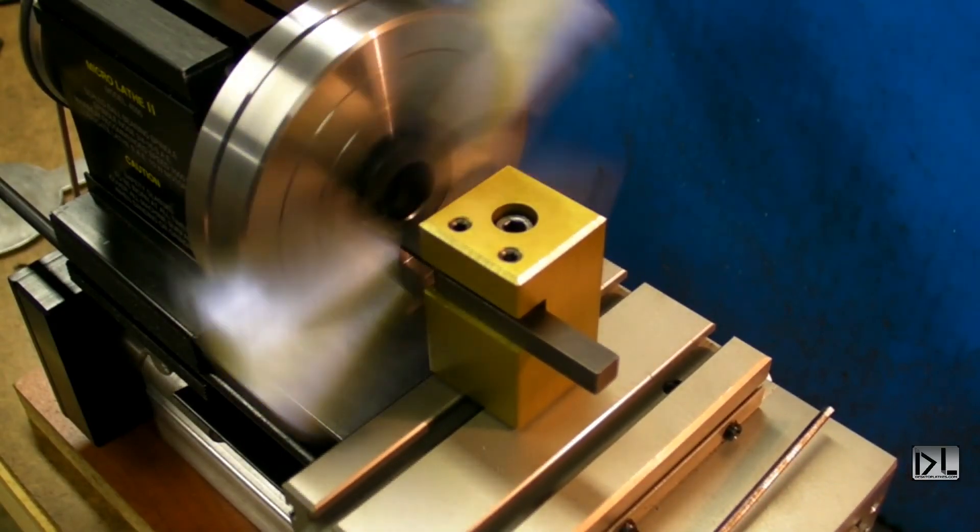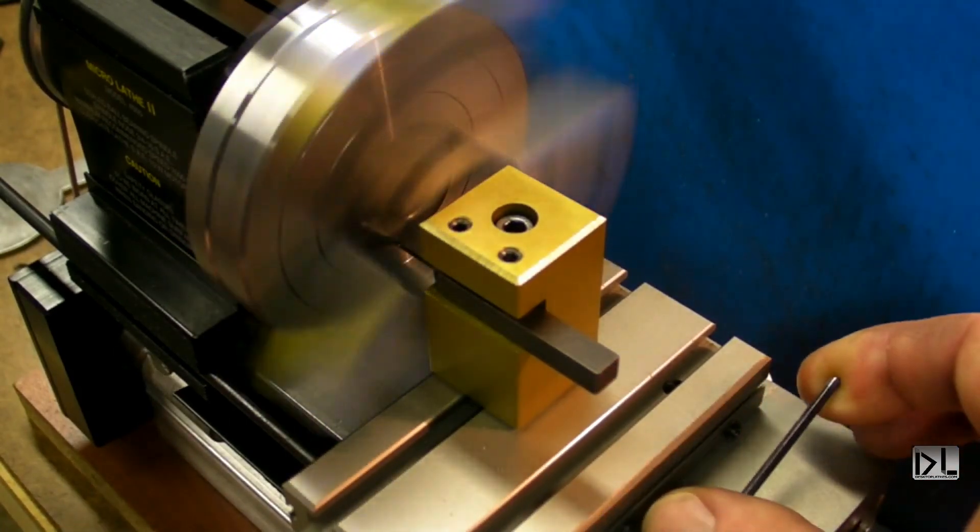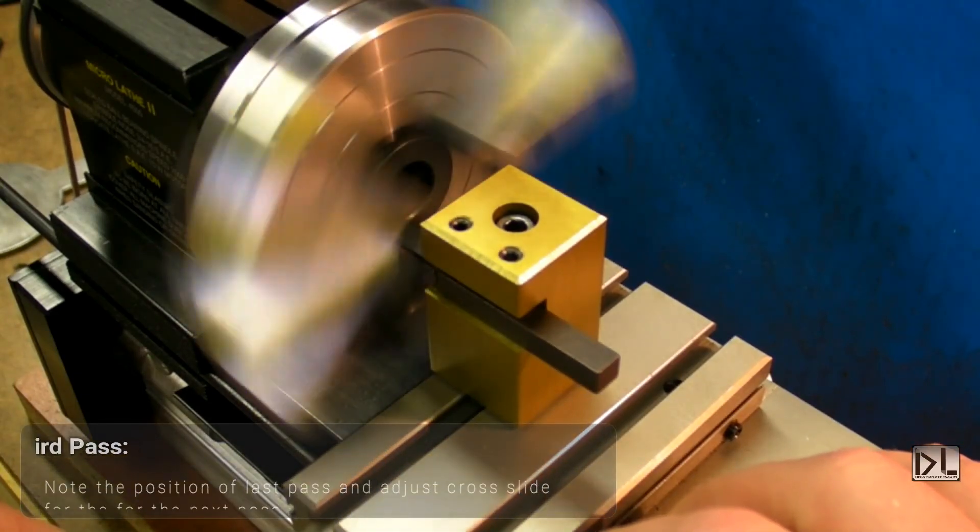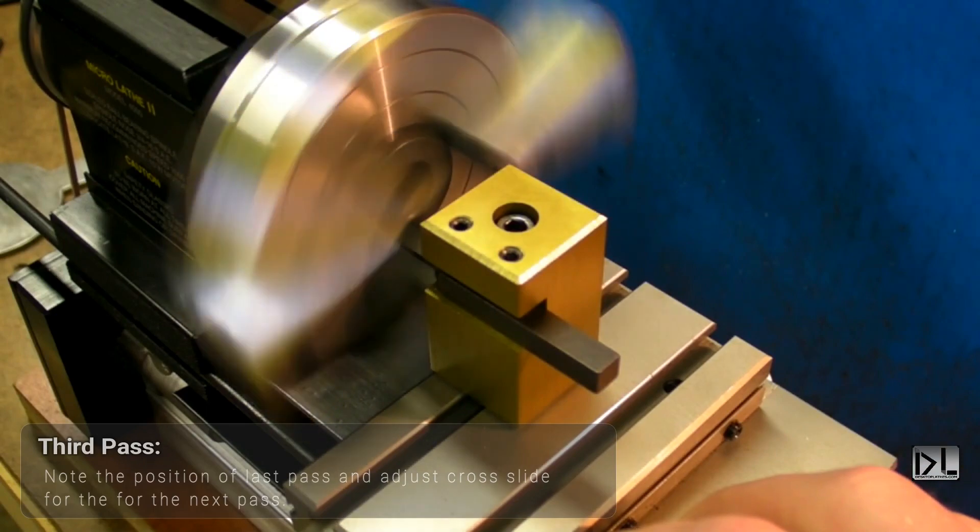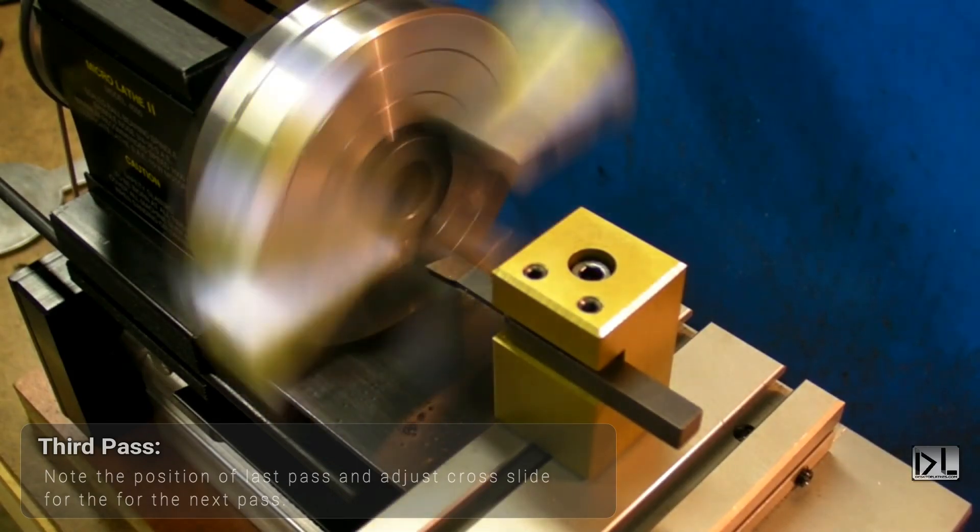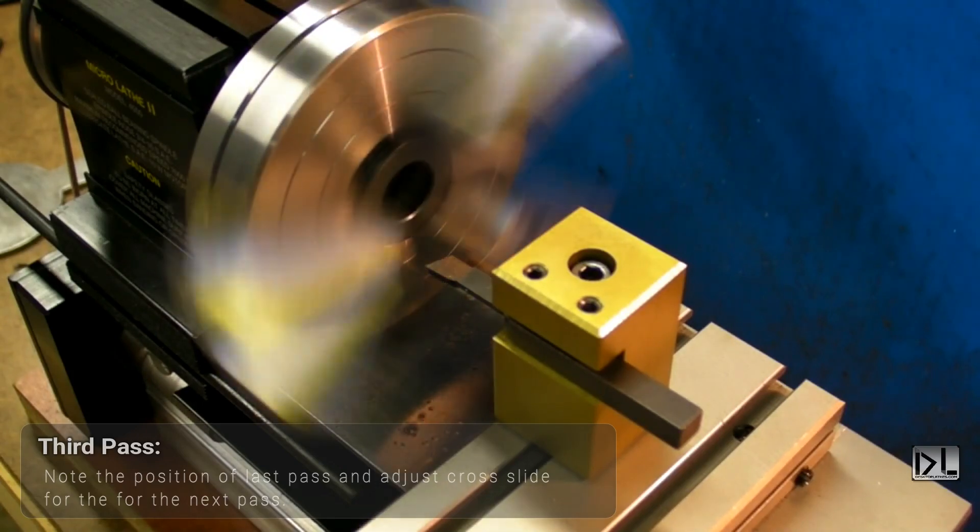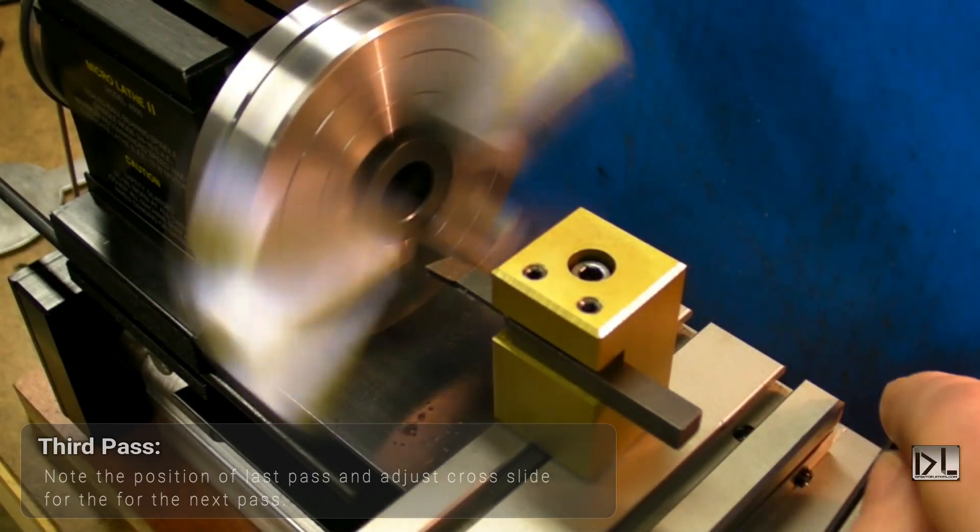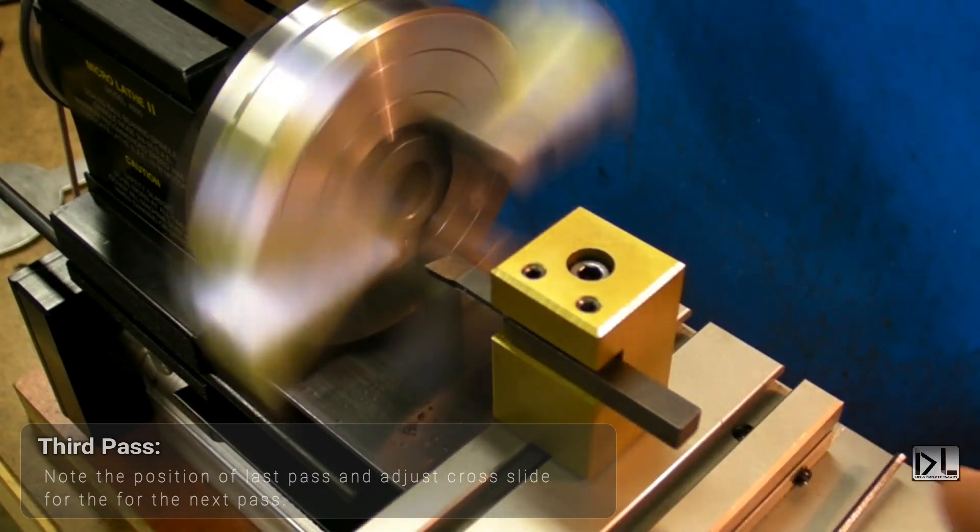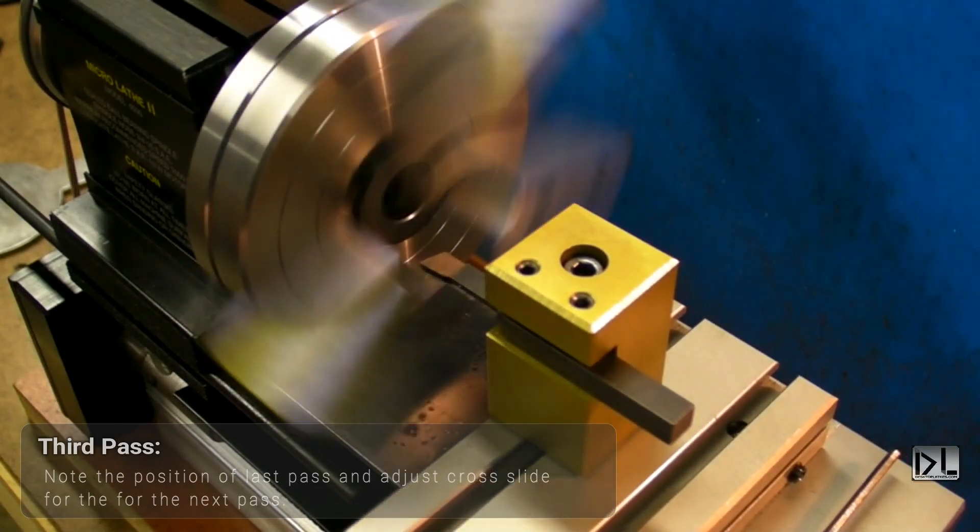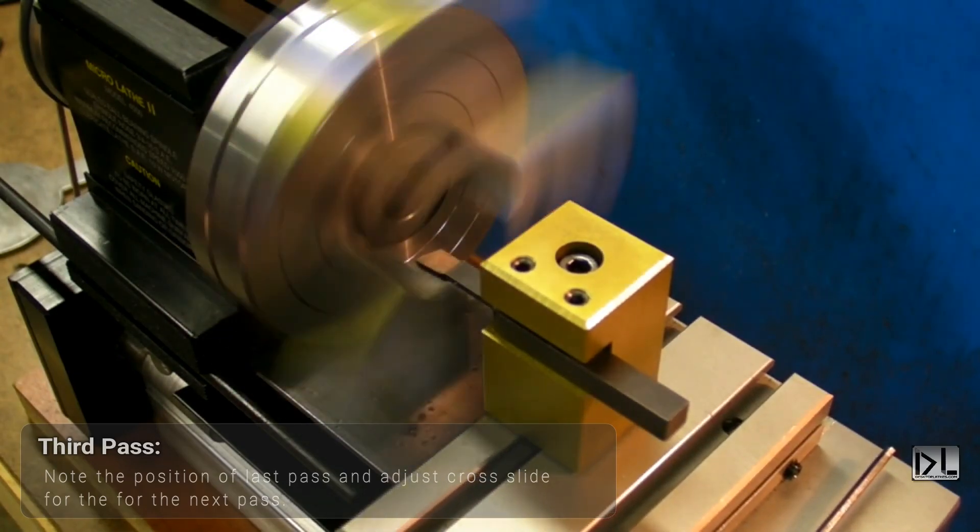And we've bottomed out again. So repeat the same procedure. Unlock the cross slide. I will move away from the material noting my original indicator position. Come back to the number two. And I'm going to go for five thousandths this time, so that will take me to forty-seven. So there's fifty thousandths per full rotation. We're going backwards in this boring operation. Lock the cross slide and making another pass.